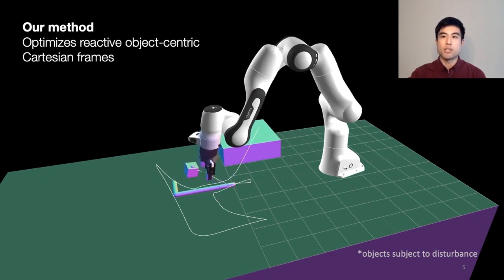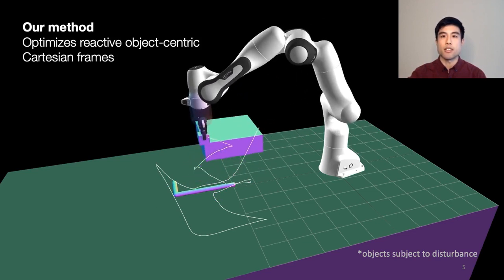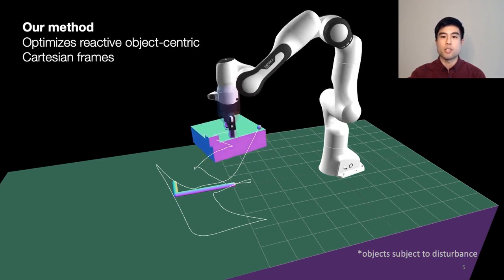This means that we can now do task and motion planning in dynamic environments where perception is inaccurate and control is imprecise. We also demonstrate this working in the real world.